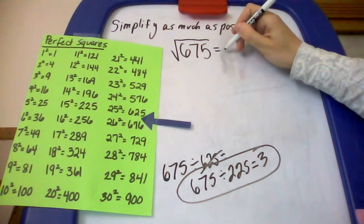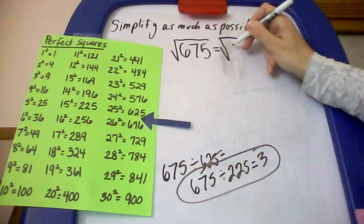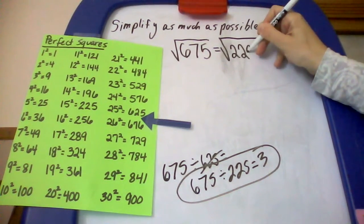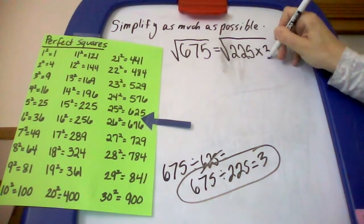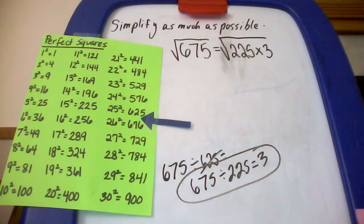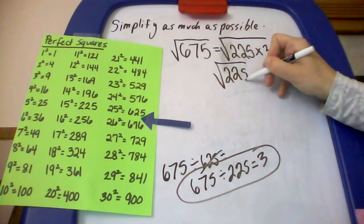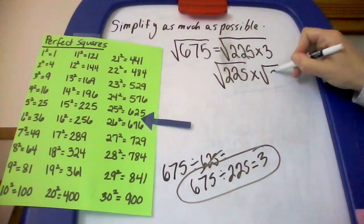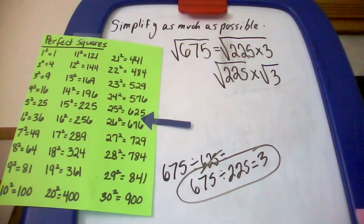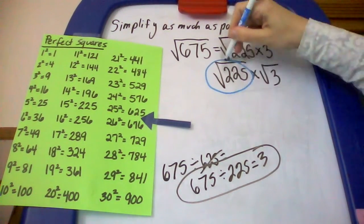So I'm going to rewrite it up at the top. The square root of 225 times 3. Now I'm going to use that product property for square roots, and I'm going to just separate this as the square root of 225 times the square root of 3.